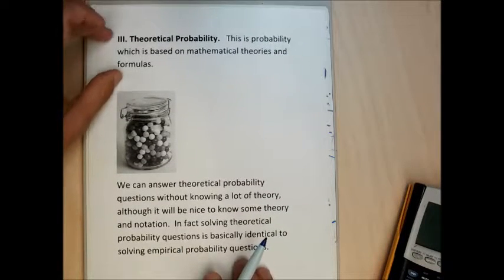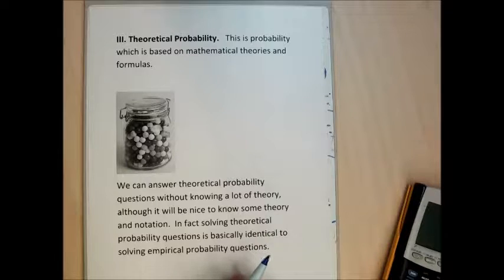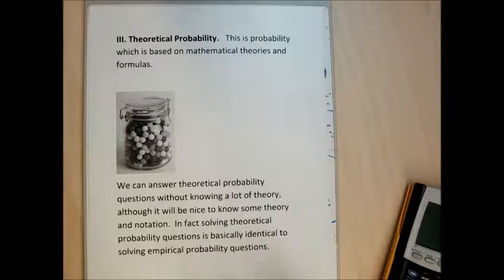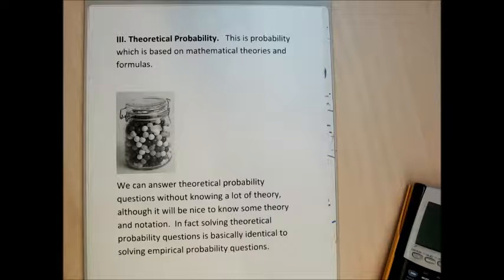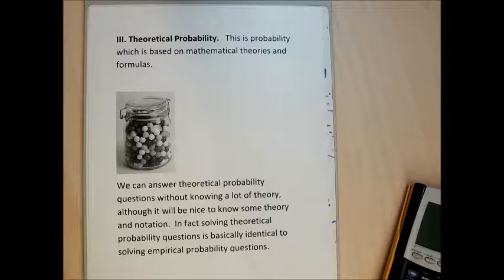We don't need to know the definitions in detail. Subjective probability is just an educated guess. Empirical probability uses data collected to answer probability questions. Theoretical probability — we don't actually have to collect data, we can just conceptualize what can happen and answer probability questions.